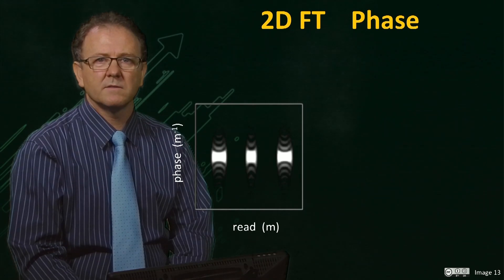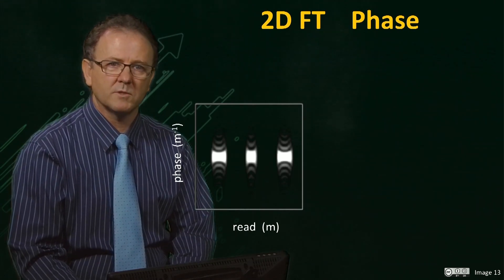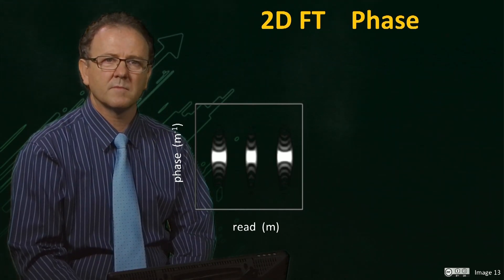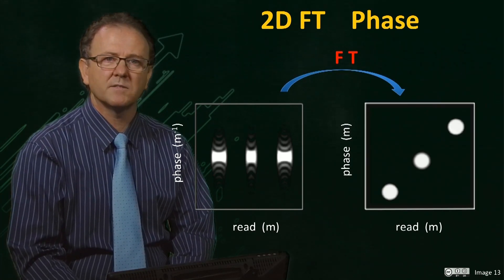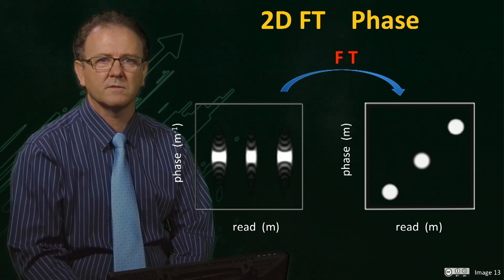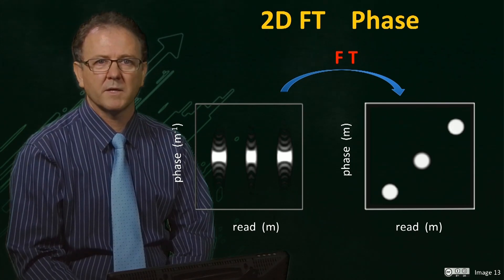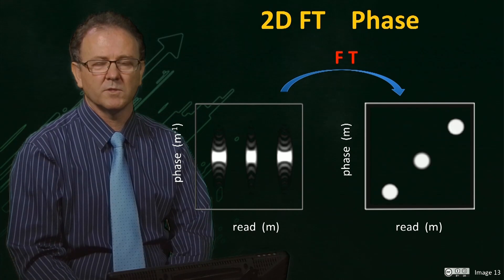It remains then to Fourier transform the data with respect to the phase direction. This transform results in a representation of the signal intensity as a function of position in the phase direction. We now have spatial information in two dimensions, in other words, an image.